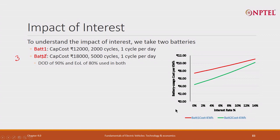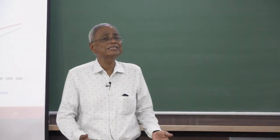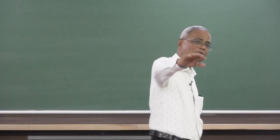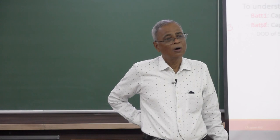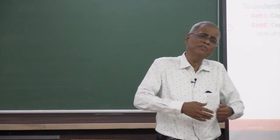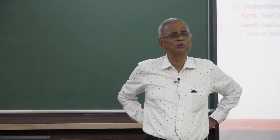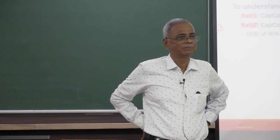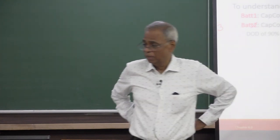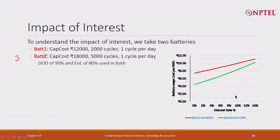The two curves are merging, and at some interest rate, battery one will become cheaper. This is counter-intuitive. The point is when you pay a low upfront amount, the interest cost is low, and that interest cost is present throughout the life of the battery. On the other hand, if you pay a higher amount, even though it lasts longer — so one would say the effective cost should be lower — the interest cost will kill you. High upfront cost with high interest can kill you, and this crossing happens around 18 to 20 percent interest.